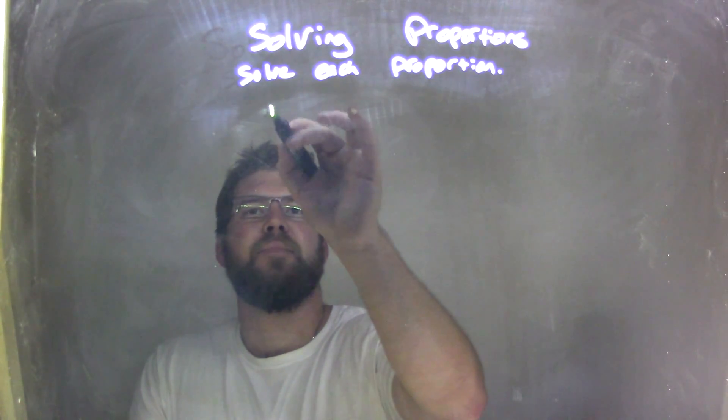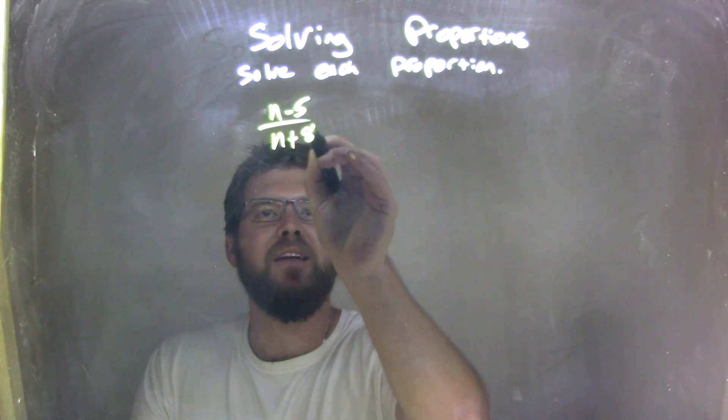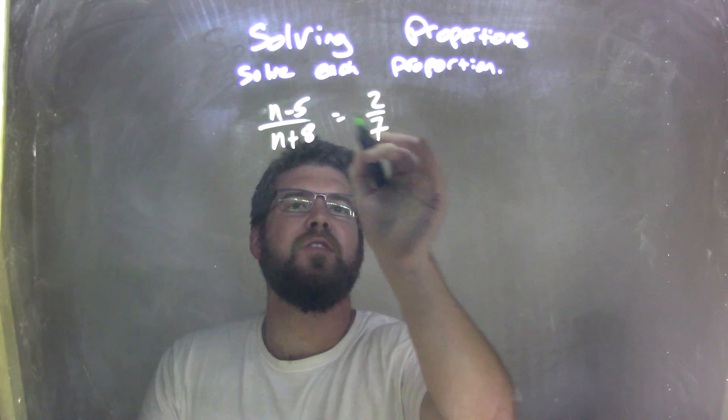So if I was given this proportion: n minus 5 over n plus 8 equals 2 over 7.